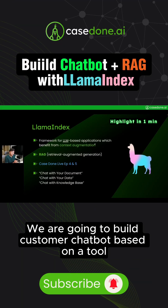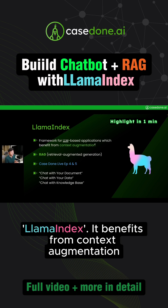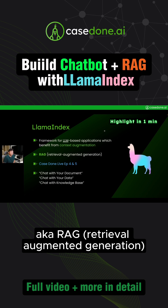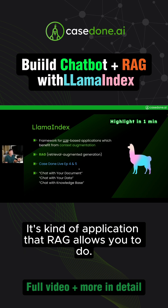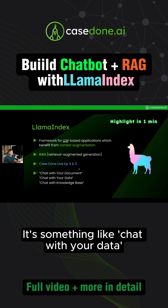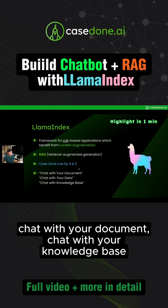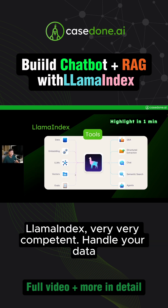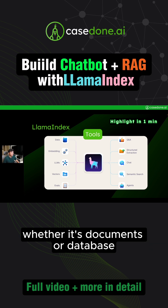We are going to build a customer chatbot based on LlamaIndex, which benefits from context augmentation, also known as RAG — retrieval augmented generation. The kind of application that RAG allows you to build is something like chat with your data, chat with your document, chat with your knowledge base. LlamaIndex is very competent at handling your data, whether it's documents or a database.